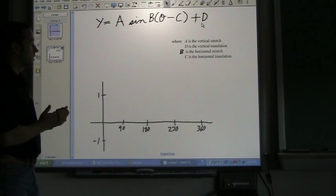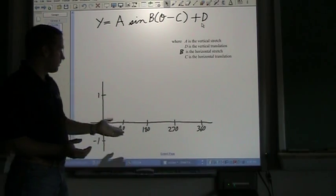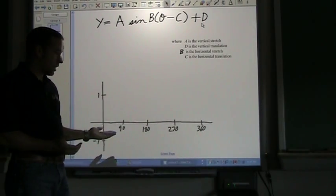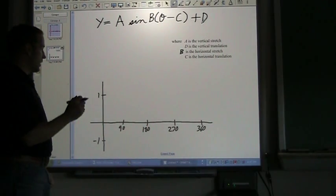And finally D on the end here is your vertical translation, so how far up or down has the wave gone. So before we know what to do with the sine wave, we have to first know what does the sine wave look like.